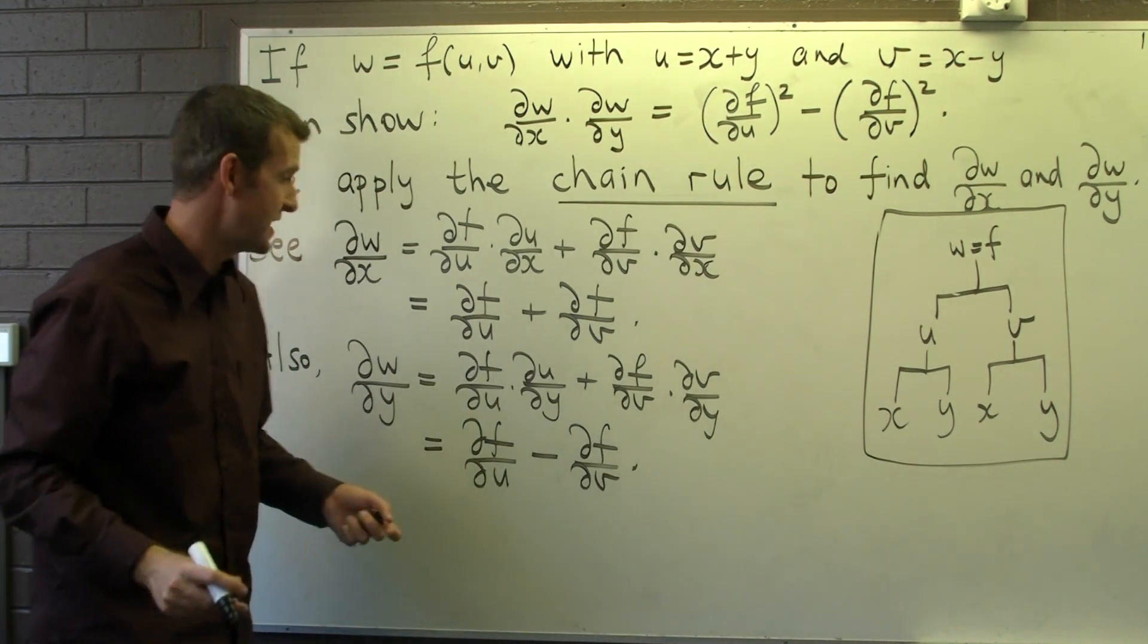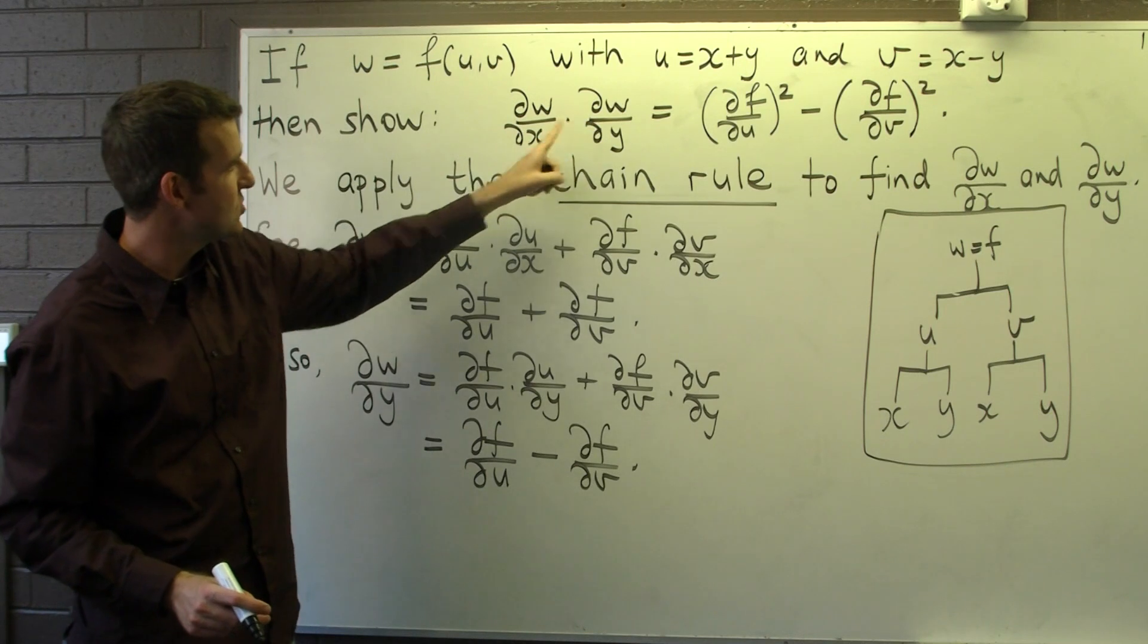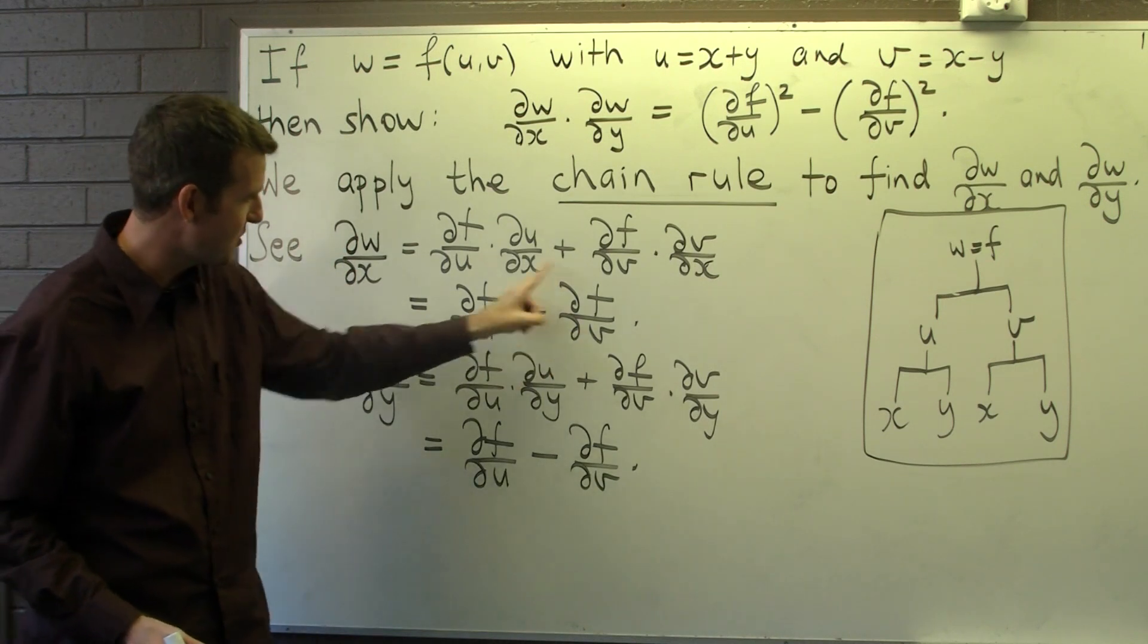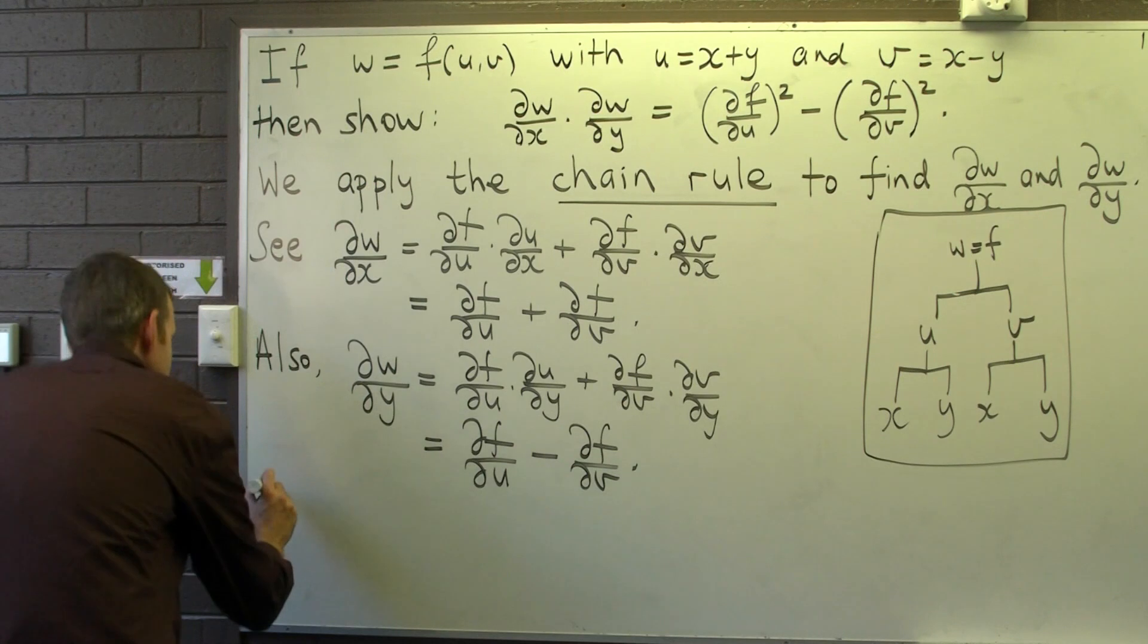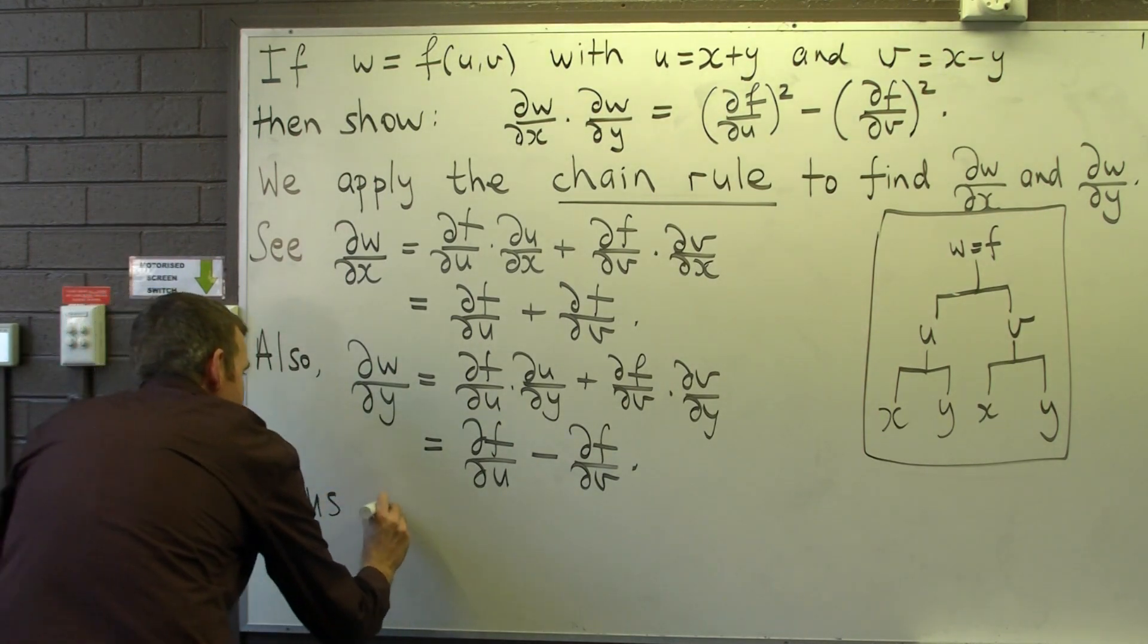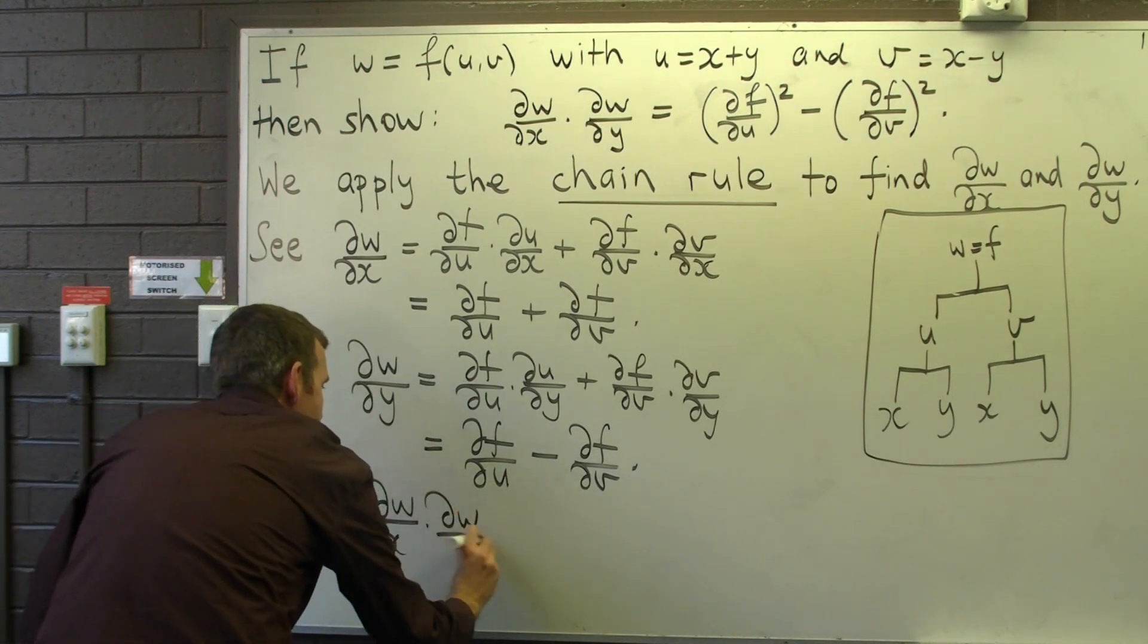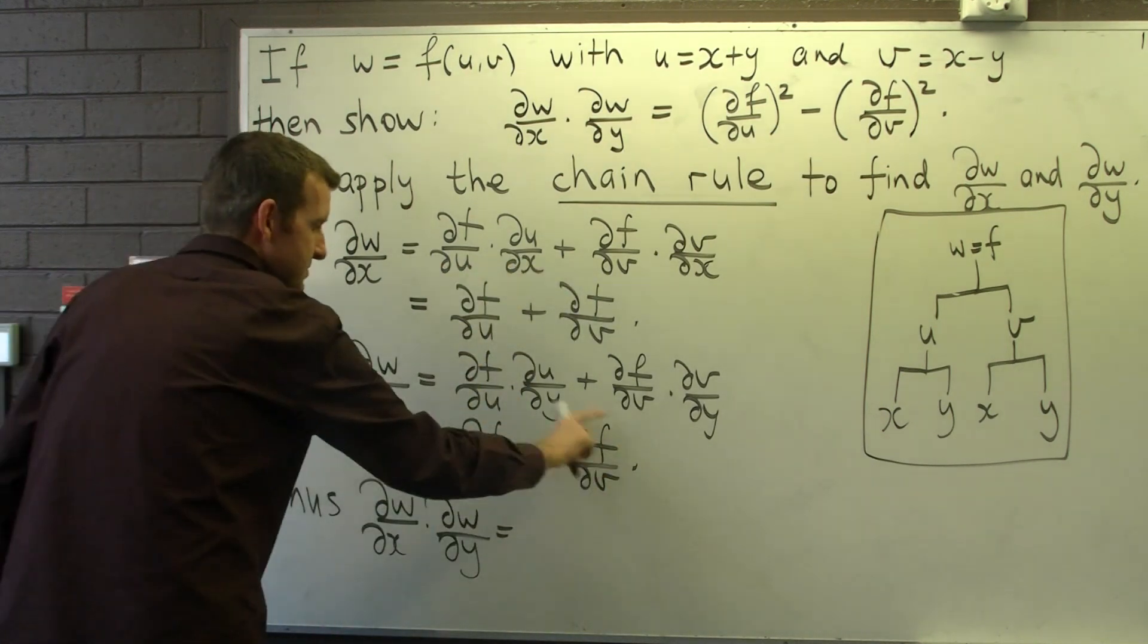Okay, so we're almost finished now. The left-hand side of our identity is these two partial derivatives multiplied together. So let's do that. Let's multiply these two by multiplying these particular expressions together. Okay, so it's just this times this.